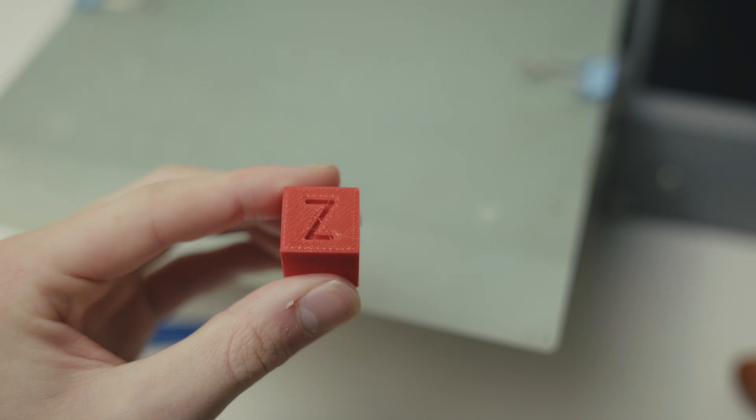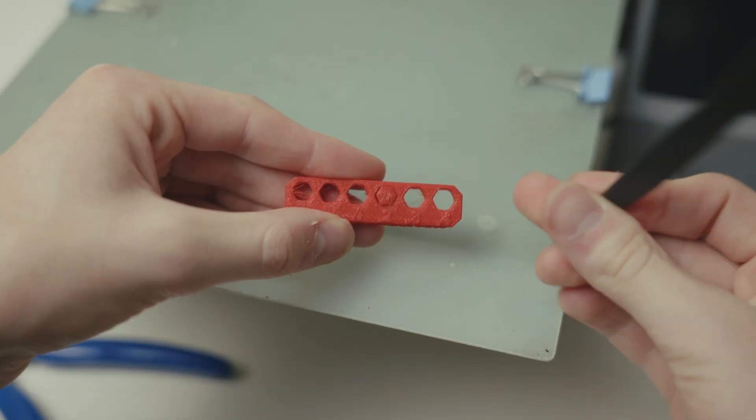Okay, real world testing time. Let's make sure the machine can actually do what it's supposed to do, which is remove moisture from the filament effectively. Let's print a benchy, a Cali cube, and some calibration parts with some off-the-shelf filament.